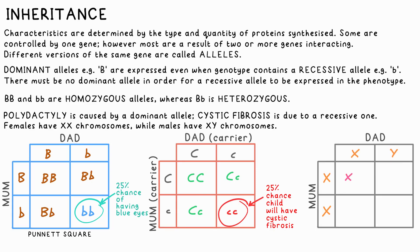Human DNA contains 23 pairs of chromosomes, but only one pair determines sex. If you have XX chromosomes, you're female. If you have XY chromosomes, you're male. The expression of these genes affects every cell in your body and every aspect of your physiology. We can also make a Punnett square to show this — as you can see, there's a 50-50 chance of a child being male or female.